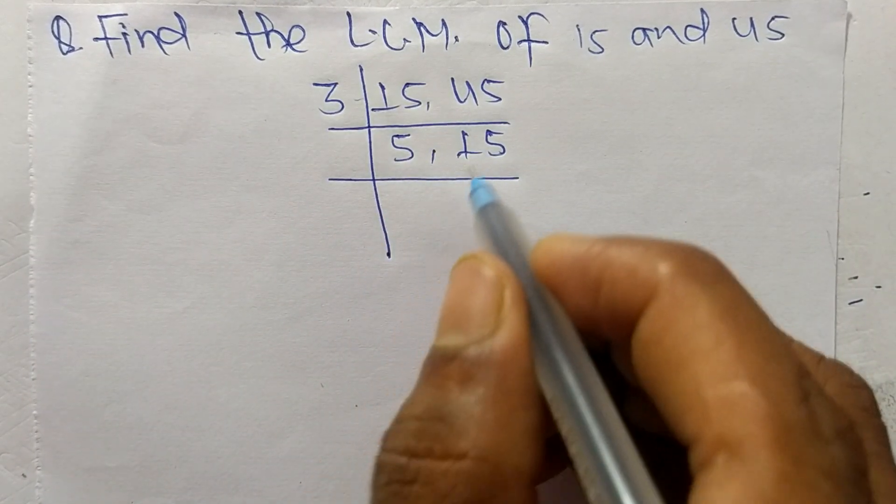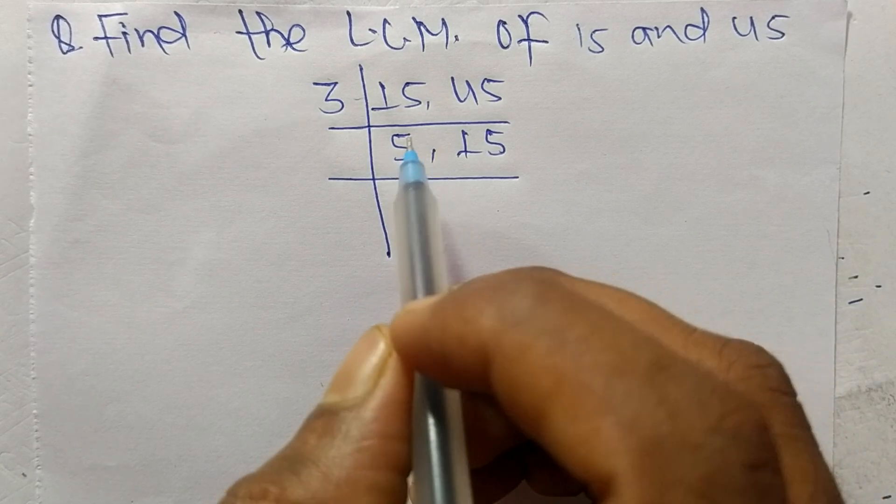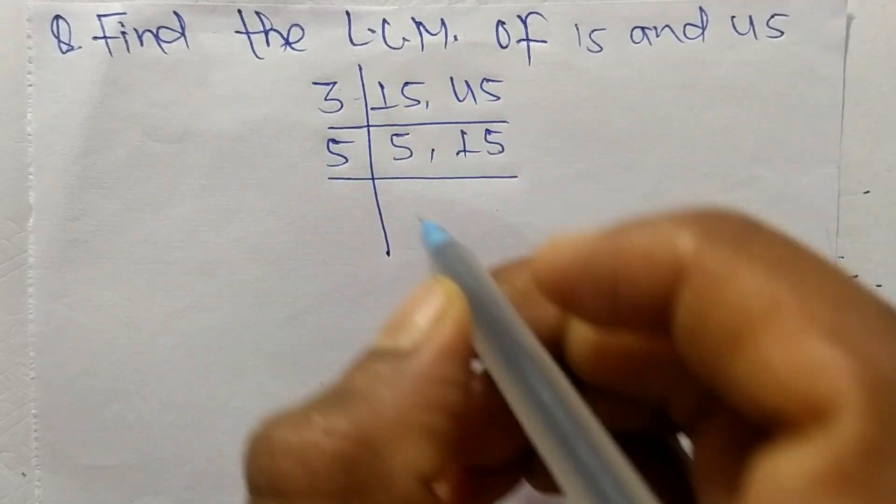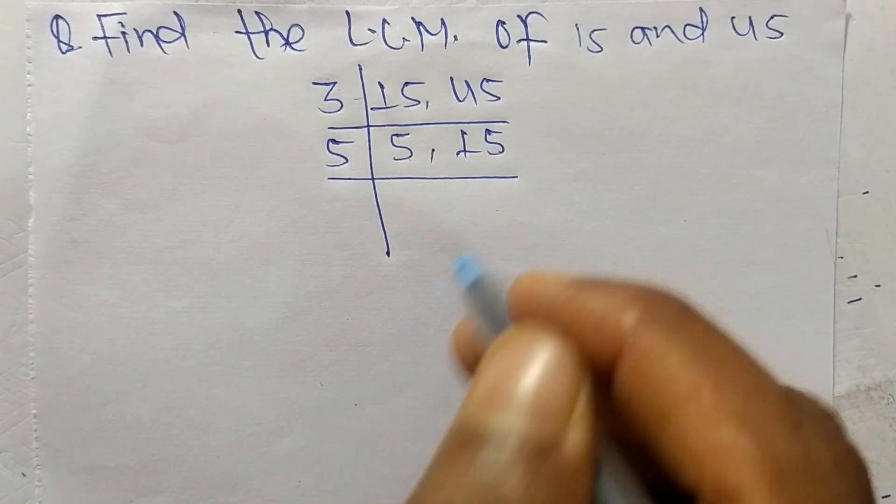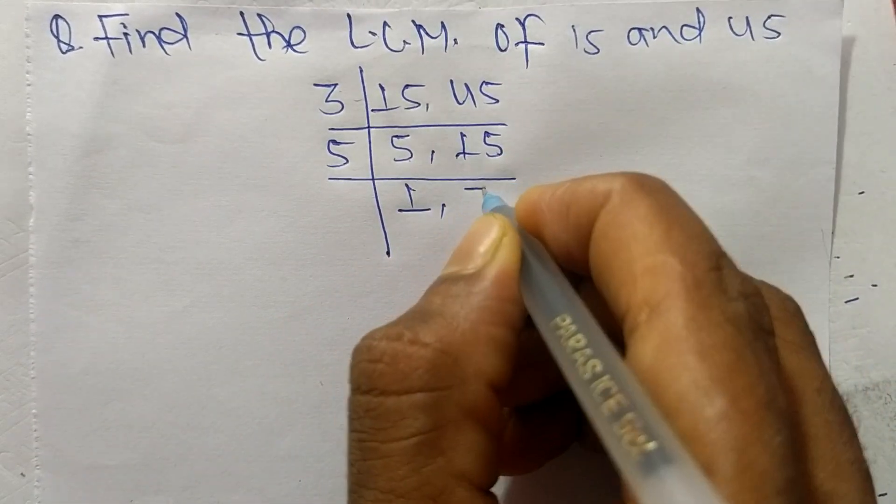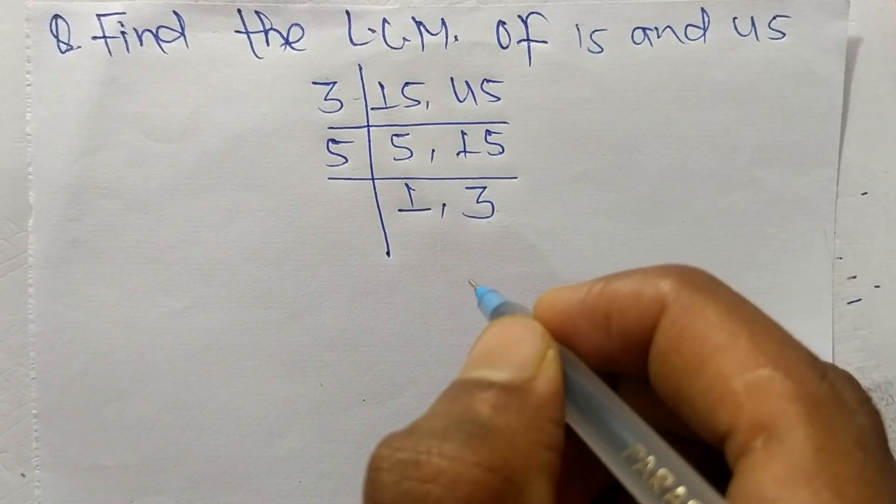So we choose the number greater than 3, that is 5, and it can divide 5 and 15 both. So 5 times 1 means 5 and 5 times 3 means it is 15.